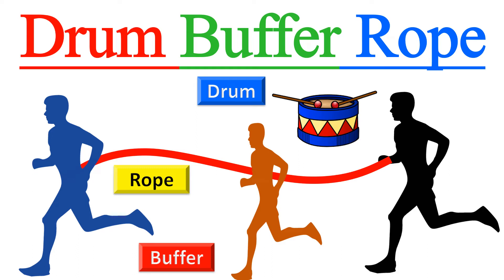This short animated video explains the concept of Drum Buffer Rope of Theory of Constraints, which is an important concept of lean management. This concept is explained with the help of animated examples, so please watch this video till the end.